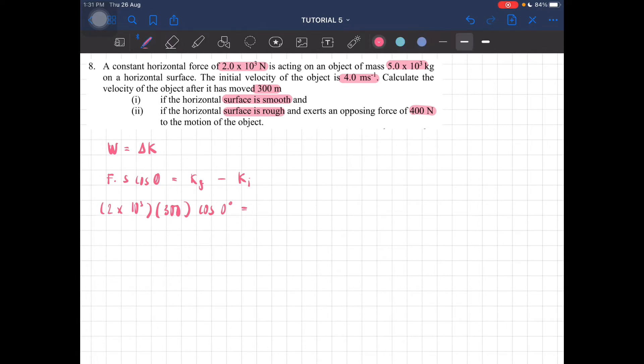That's ½mv² minus ½mu². So 2×10³ times 300 equals ½ times 5×10³ times (v² - u²), where u is 4, so v² minus 4².